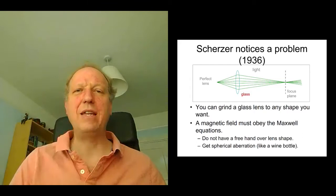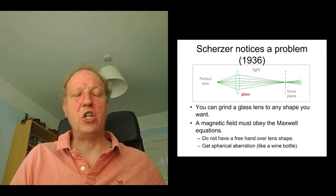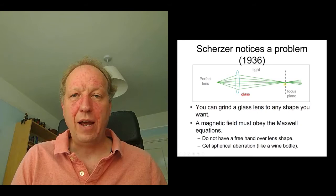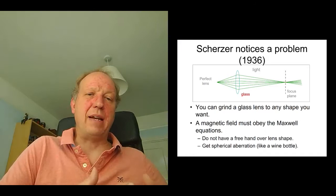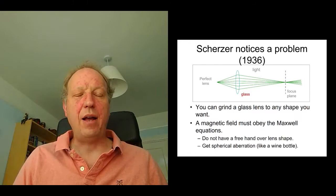And Otto Scherzer in 1936, shortly after the invention of the electron microscope, realized that there was a problem. Previously, when we were thinking about glass for light optics, we can think of grinding a glass lens to any shape that we want and making the lens essentially a perfect lens that takes a point source of radiation and focus it back to a point here at the image plane. The problem is that a magnetic field has to obey the laws of physics, such as the Maxwell equations, and so we don't have a free hand over how we can shape a magnetic field. It has to obey these specific rules.